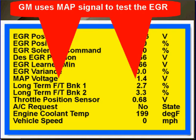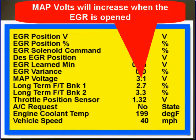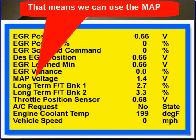EGR testing. We have specific tests for Ford and Chrysler EGR testing. This is specific to General Motors. We're going to use scan data to solve EGR flow and position faults. GM uses the MAP signal to test the EGR. MAP voltage will increase when the EGR is open, so that means we can also use MAP voltage to test the EGR.